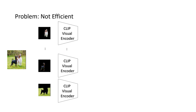However, a key problem in those methods is that for a given image, they need to send all the masked or cropped images to the pre-trained image encoder individually. If an image has 100 bounding boxes or masks, such methods will need to run CLIP 100 times, which is very inefficient.